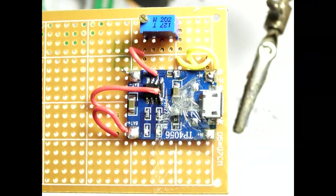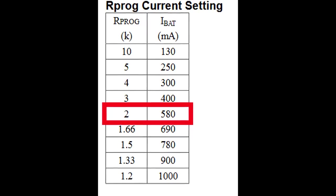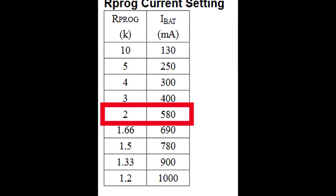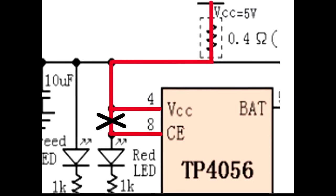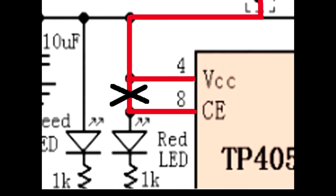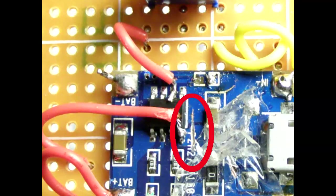Instead of using a resistor, I used a potentiometer set at 2k resistance. I then cut the trace that pulled the CE pin to VCC and then placed a jumper wire to the PCB.